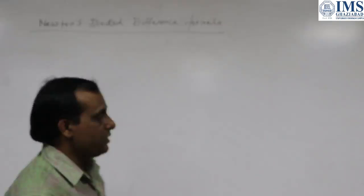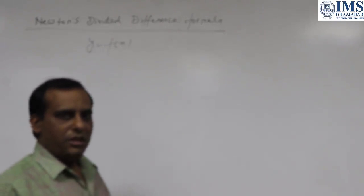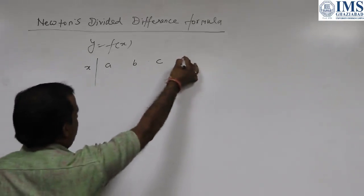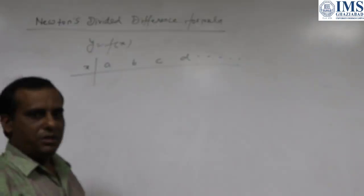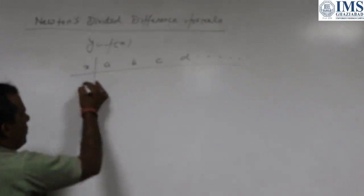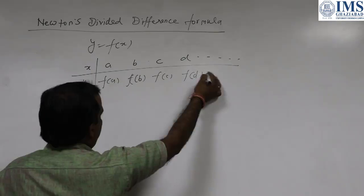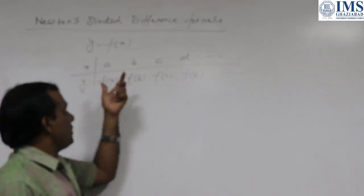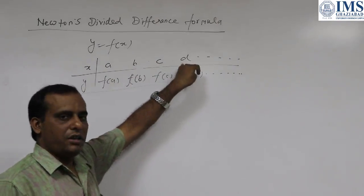Like y equals f(x), we have a polynomial and we have some values of x like a, b, c, d and so on, and for those values of x we have the values of y like f(a), f(b), f(c), f(d) and so on. Now if we want to calculate the value of y for a value of x which is between a and b, or between b and c, or between c and d and so on, then we will use the Newton Divided Difference Formula.